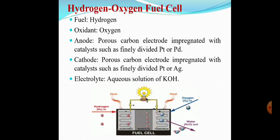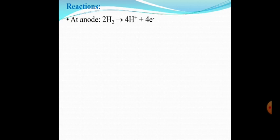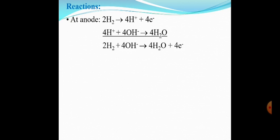At the anode, an oxidation reaction takes place. As hydrogen gas diffuses through the anode, it is absorbed on the electrode surface and reacts with hydroxyl ions to form water molecules. The overall reaction is: 2H₂ + 4OH⁻ → 4H₂O + 4e⁻.